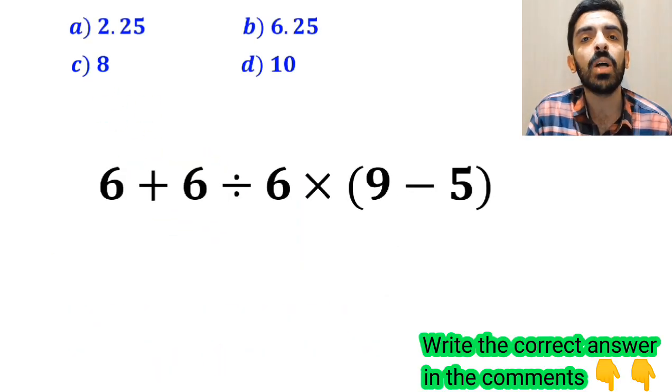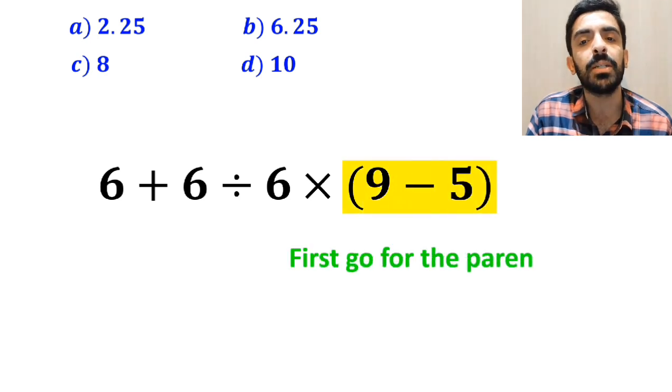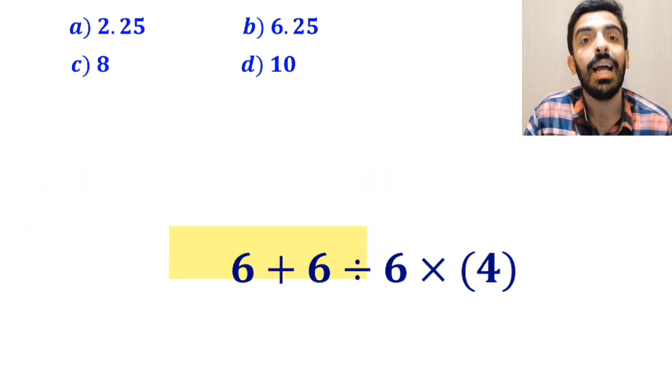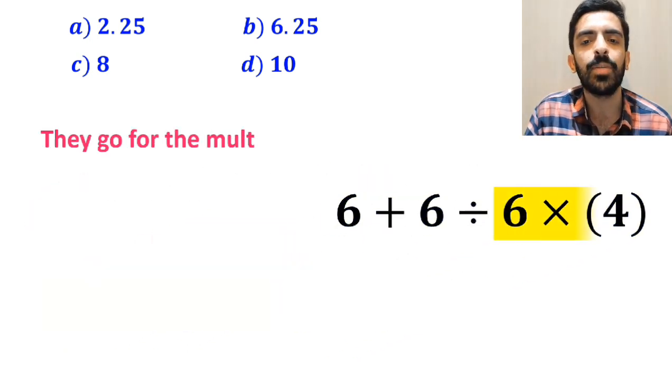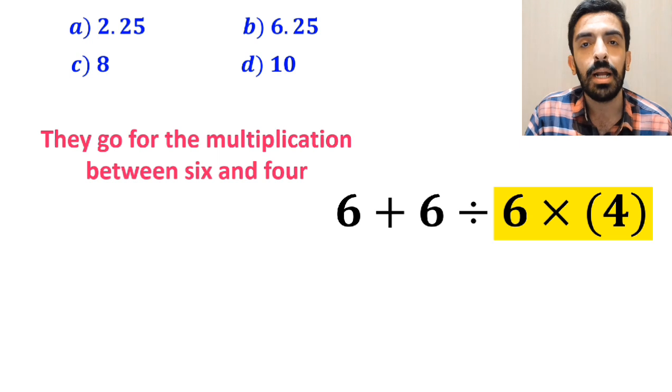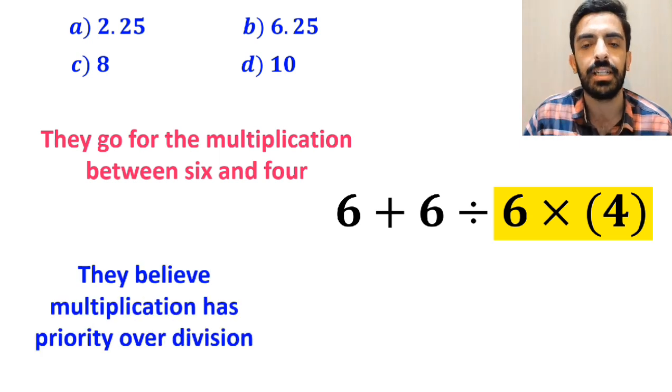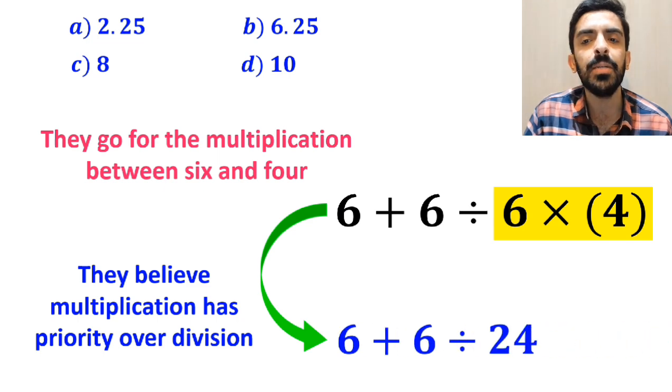Also, some other people, when solving this question, first go for the parenthesis and write this expression as 6 plus 6 divided by 6 times 4. In the next step, they go for the multiplication between 6 and 4 because they believe multiplication has priority over division. So, this expression simplifies to 6 plus 6 divided by 24.